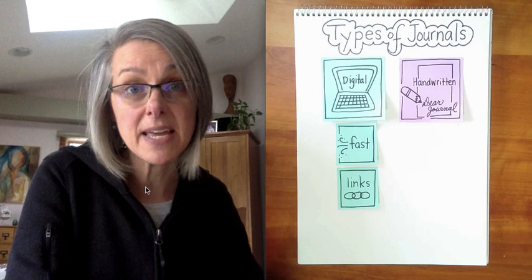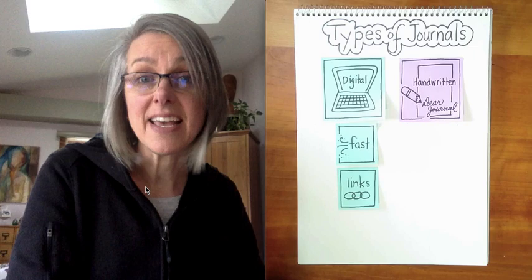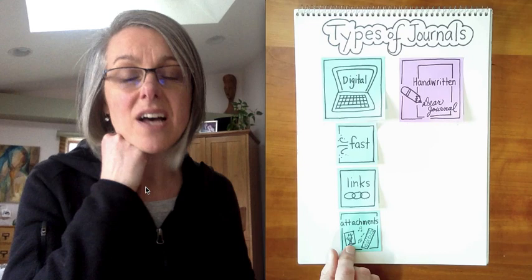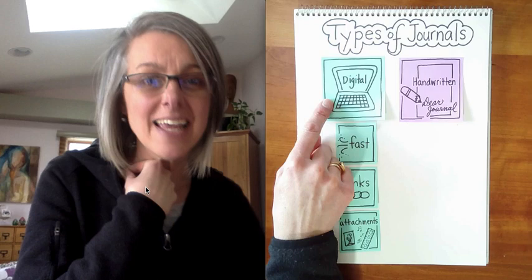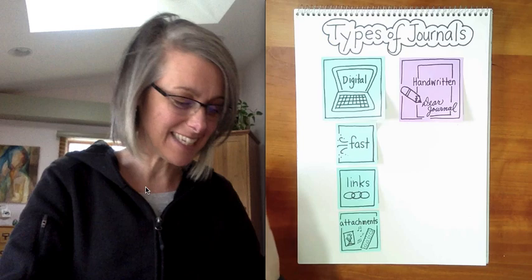Some people like digital journals because they can also insert links to things. If there's a recipe that they've tried, they can link that in or a story in the news that's been interesting, they can link that in as well. Similar to links are attachments. It's oftentimes much easier to attach a photograph or a video clip into a digital journal. Last week I saw a fourth grader whose sister had learned how to ride a bike and he linked a quick video into his digital journal about that. It was something really exciting to see.